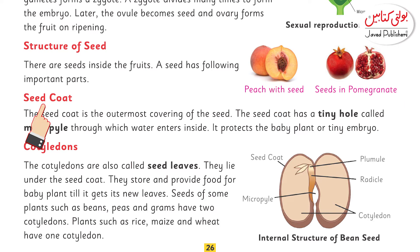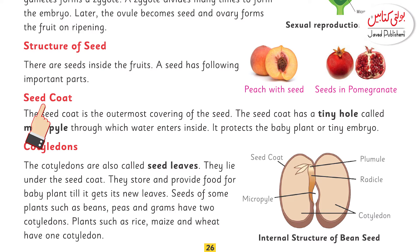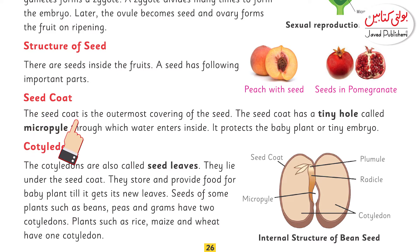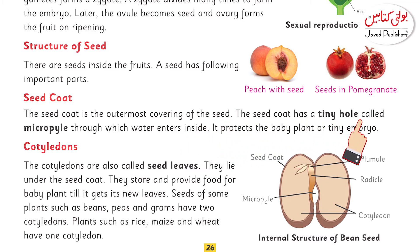There is a word that comes to mind: coat. For example, when winter comes, we wear a coat to protect ourselves against winter conditions. So here, the seed coat also provides protection. The seed coat is the outermost covering of the seed. The seed coat has tiny holes called micropyles.